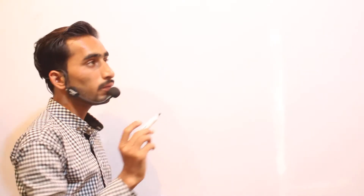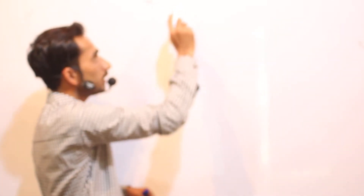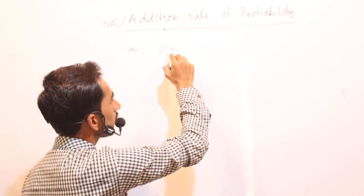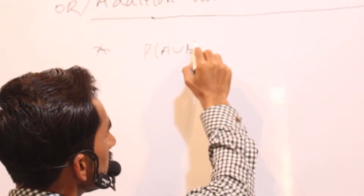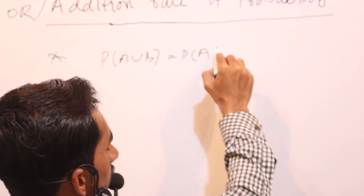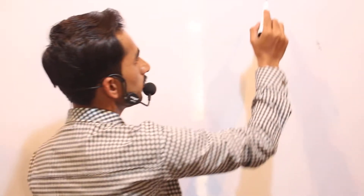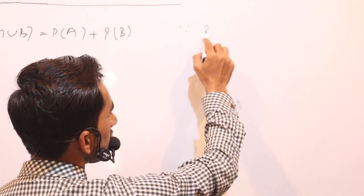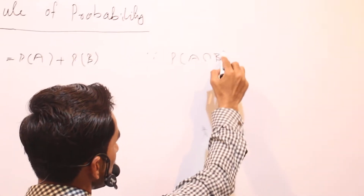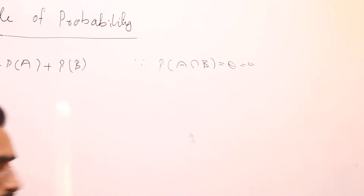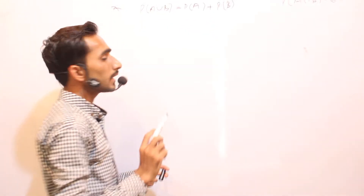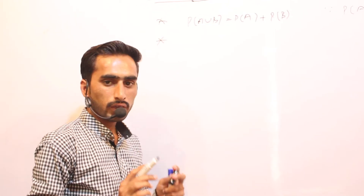There are two conditions in the addition rule. The first condition is when we have mutually exclusive events. Then the addition rule can be written as: probability of A union B is equal to probability of A plus probability of B, because probability of A intersection B is equal to zero.